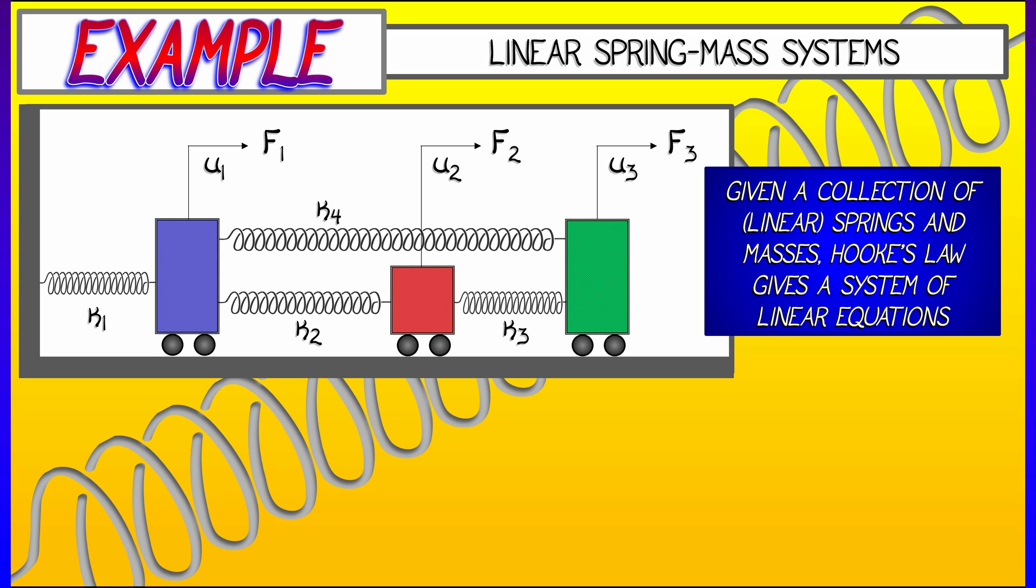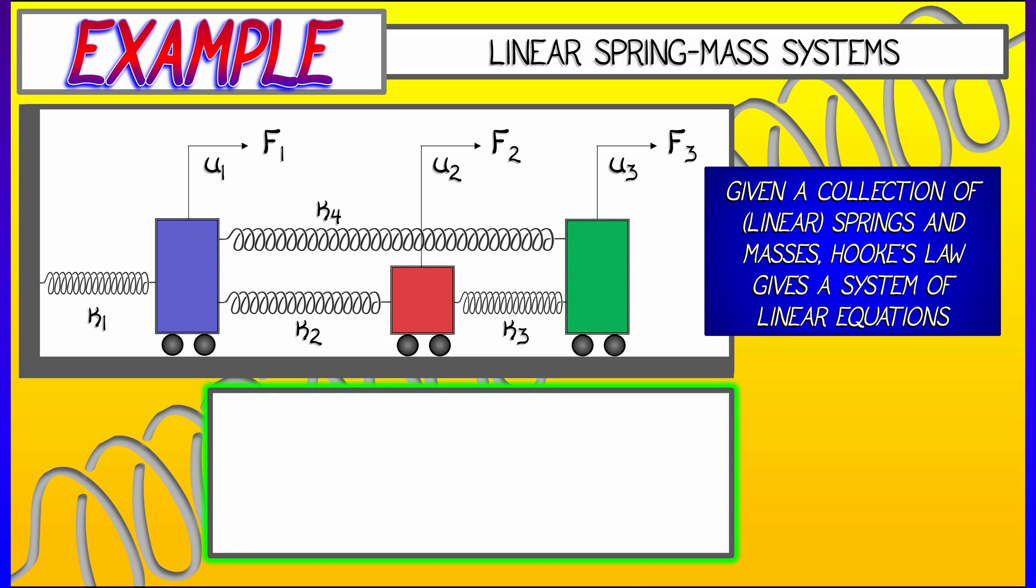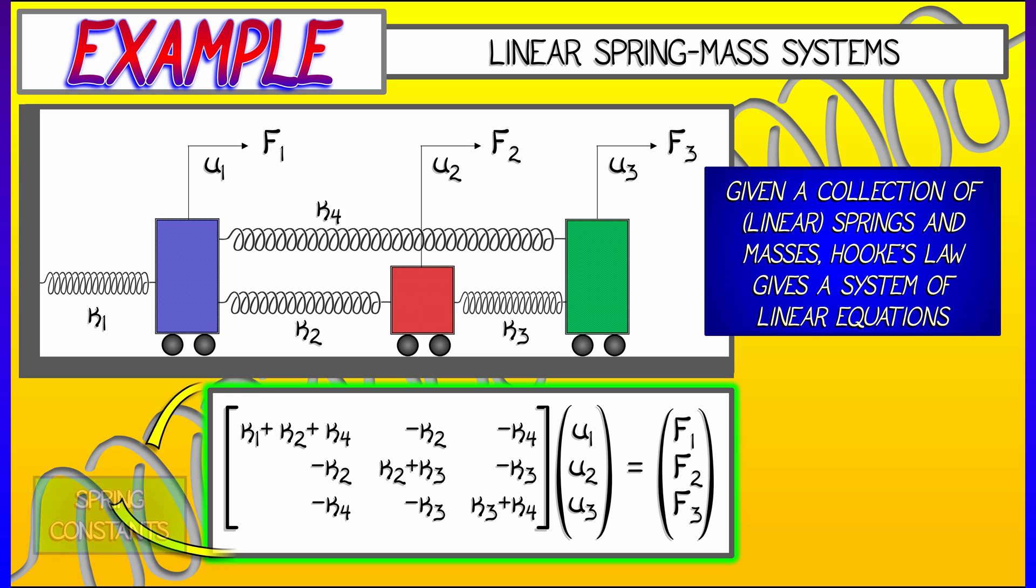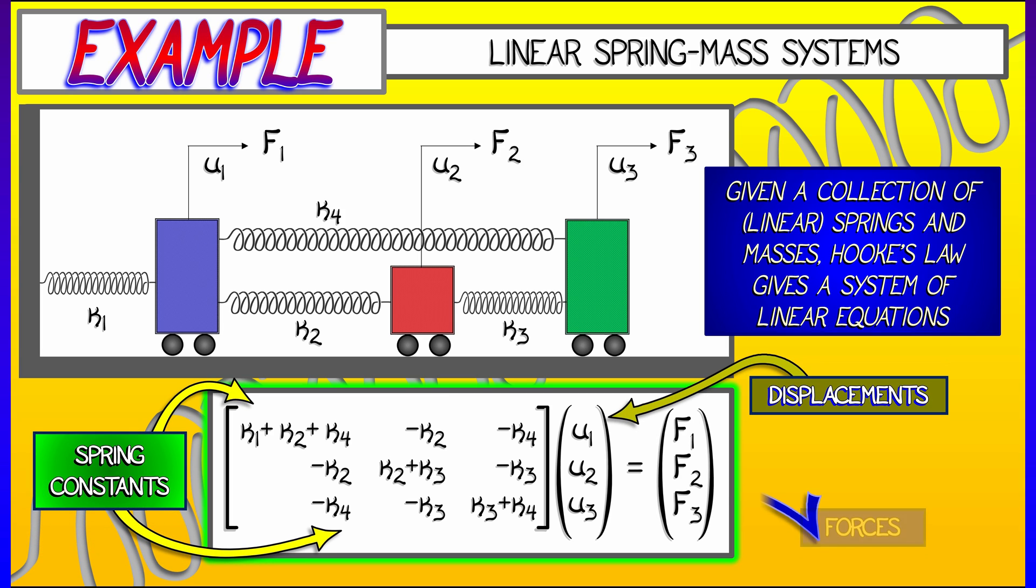In terms of the arrangements of the springs and the spring constants, kappa1 through kappa4, there is a system of linear equations that one can write down. If you put it in the form of AX equals B, where X is the displacements U1, U2, U3, B is the forces F1, F2, F3, the matrix A is composed of various combinations of these spring constants, the kappa sub i's.